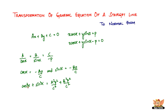Squaring and adding gives cos²α plus sin²α equal to a²p² over c² plus b²p² over c². We know that sin²α plus cos²α equals one, so one equals a²p² over c² plus b²p² over c². Factoring out p² over c², we get one equals p² over c² times (a² plus b²).